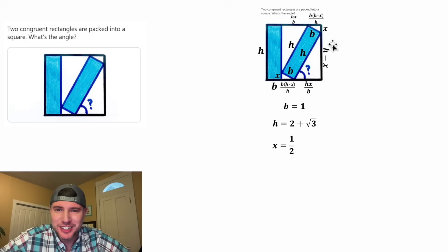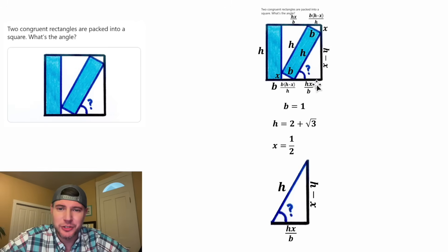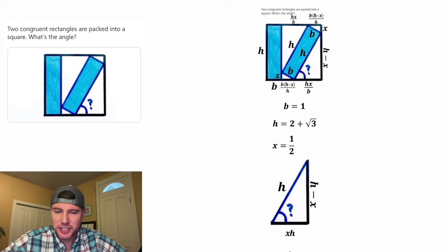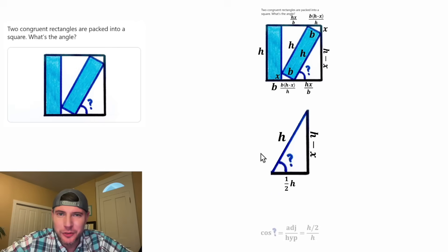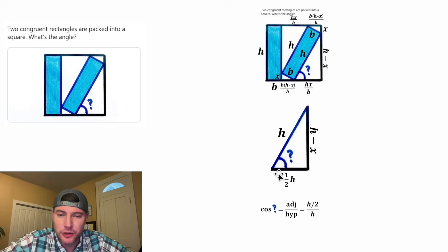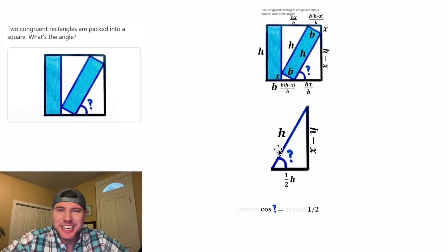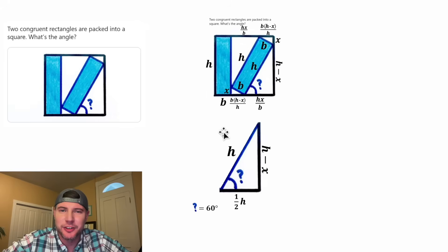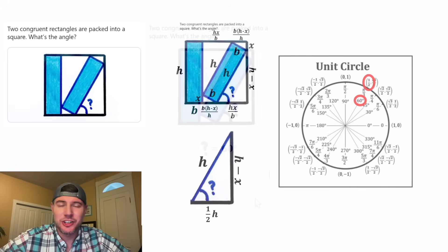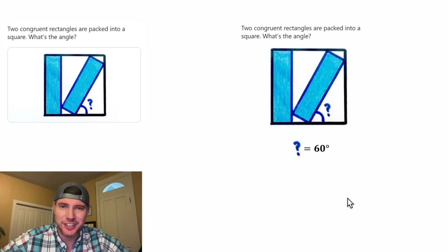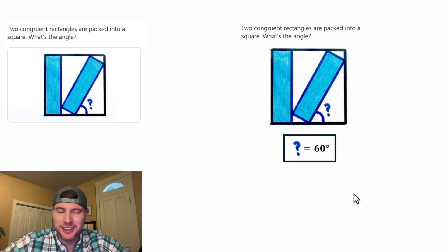Now we have values for all our variables. Let's focus on the triangle that contains the question mark. With B equal to one, the denominator disappears. Plugging in X equals one half, we take the cosine of the question mark angle: cosine of question mark equals adjacent over hypotenuse, which is (½H) over H. The H's cancel, giving cosine of question mark equals one half. Taking the arc cosine of both sides gives question mark equals 60 degrees. That is the answer — let's put a box around it.